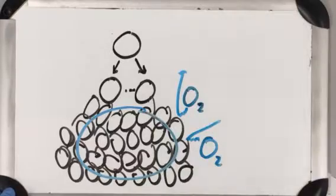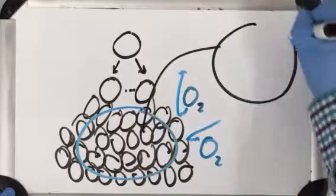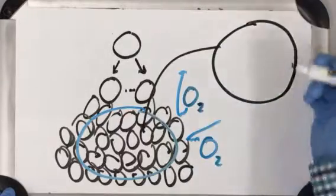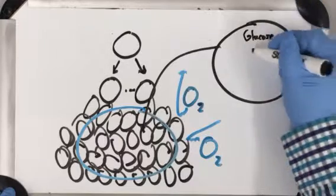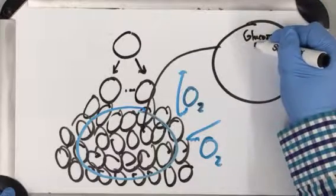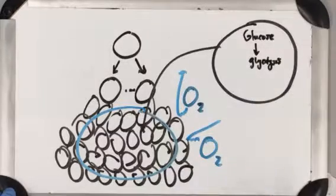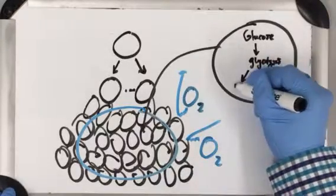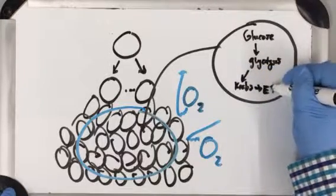So if we take a look at one of these cells deep in the tumor, usually when you have glucose, you can break it down with glycolysis. That's that first step, remember? And then you go on and you do the big Krebs cycle and the electron transport chain, right?